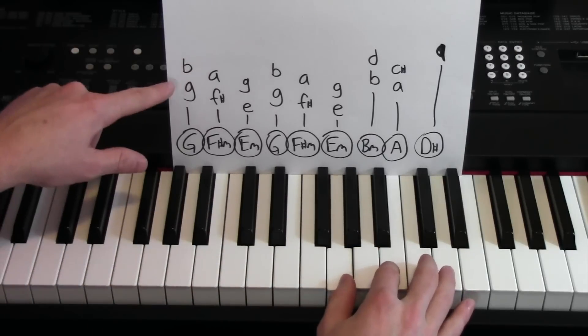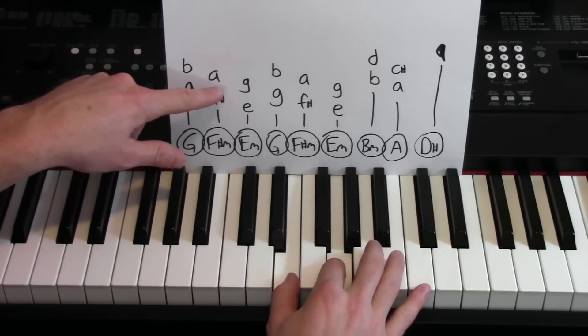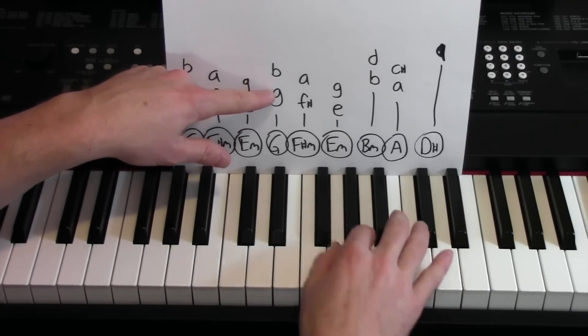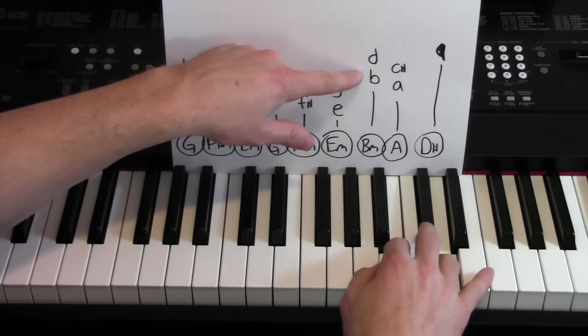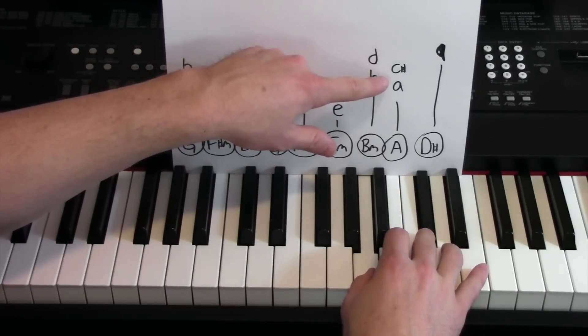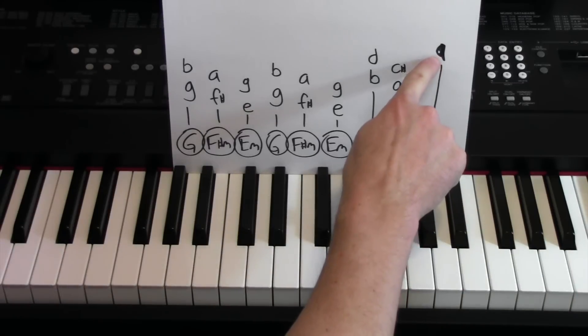Alright, so right hand is going G to F sharp and A to E, G, G, B, F sharp, E, G, B, D, A, C sharp, up to a high A there. Doesn't look like an A, but it's an A.